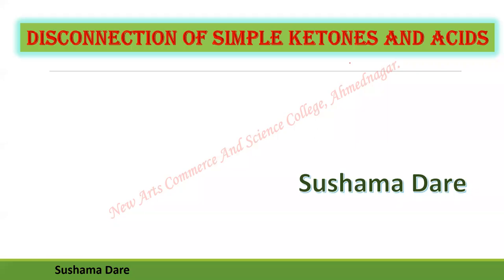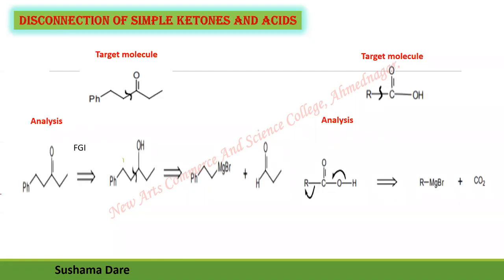Here I am discussing the disconnection of simple ketones and acids. For the first target molecule, we always first ask the question: does the target molecule have a functional group? The answer is yes — the functional group is a carbonyl group.